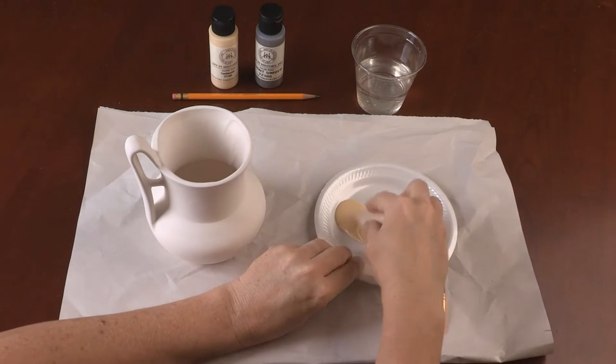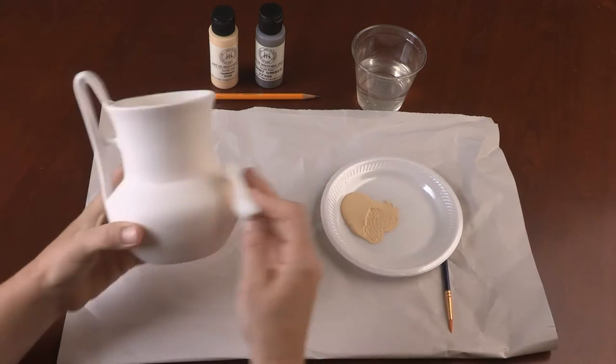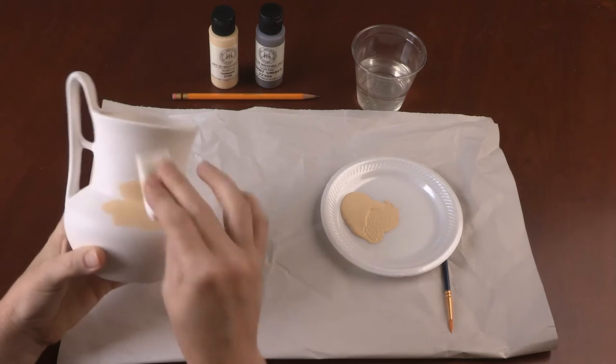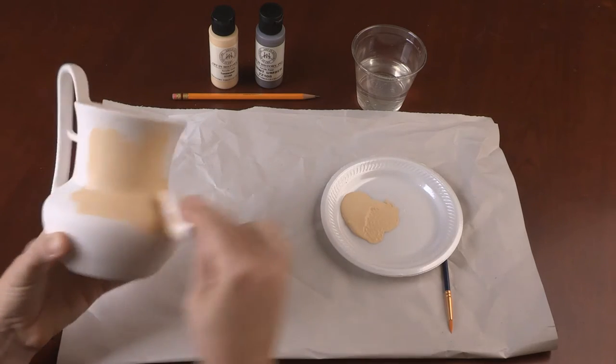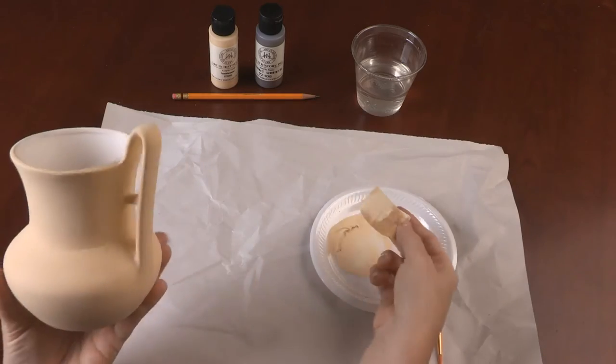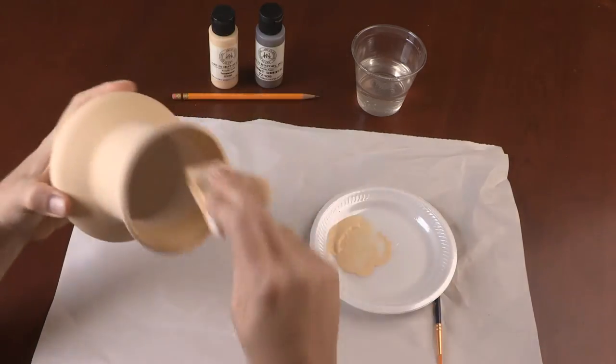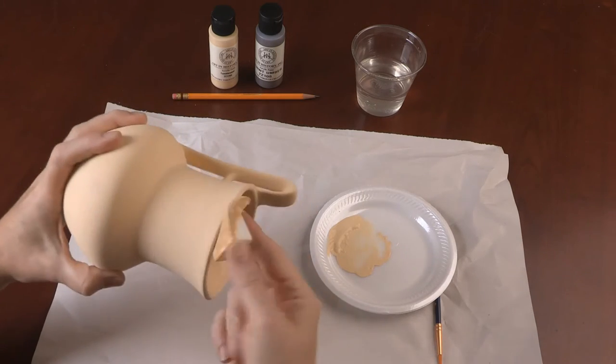Using the small end of the sponge and the yellow paint, cover the outside of the replica until it is uniform in color. Paint the inside of the rim with the yellow paint. You do not need to paint all the way to the bottom on the inside.